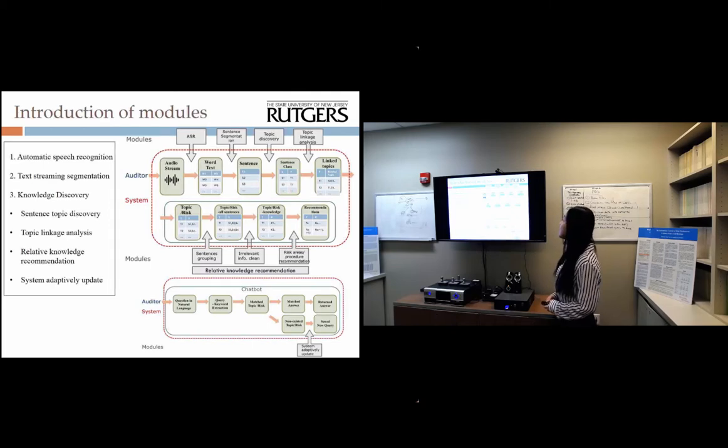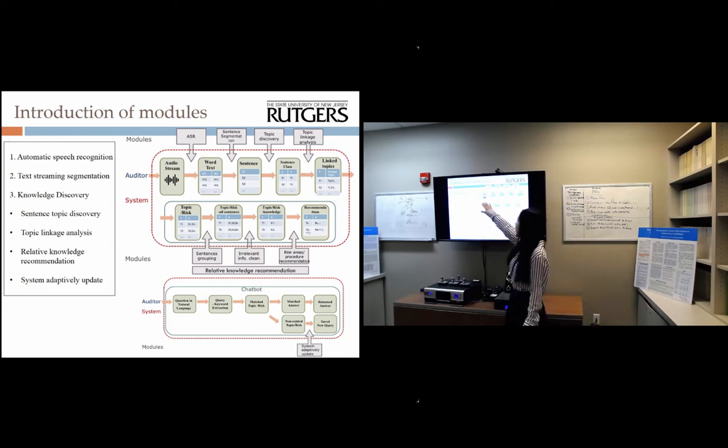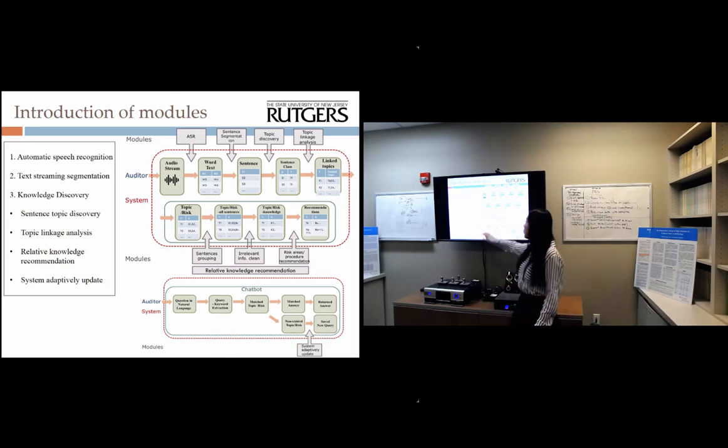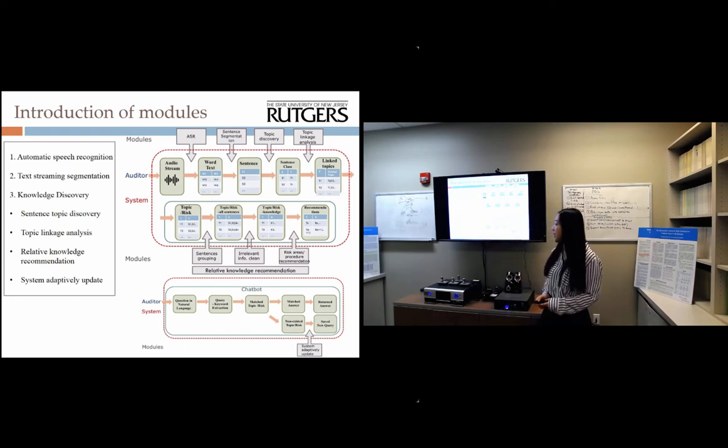There are three main models in this knowledge collection process. The first is automatic speech recognition, then text streaming segmentation, and the third is knowledge discovery, which contains four parts: sentence topic discovery, topic linkage analysis, relative knowledge recommendation, and system adaptive updates. I want to give you a very quick illustration about what we do in each of the modules.